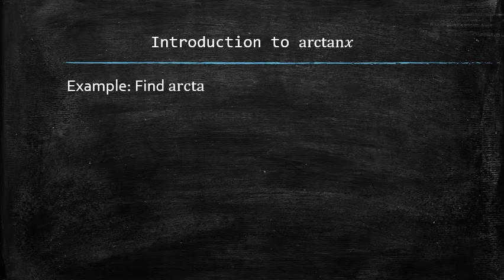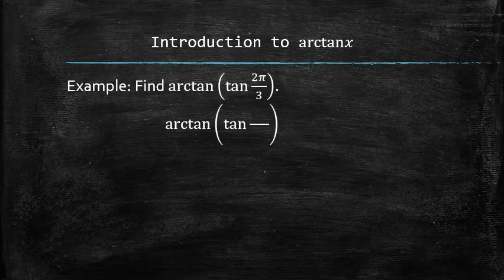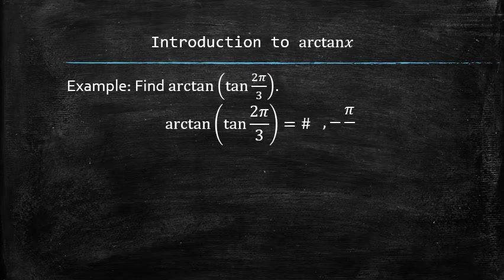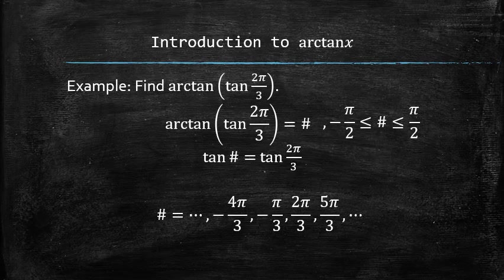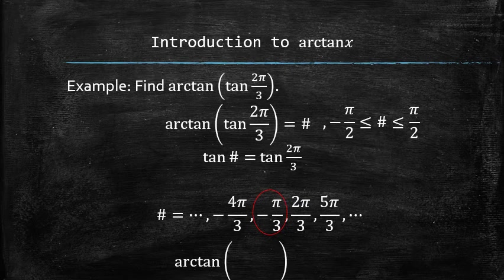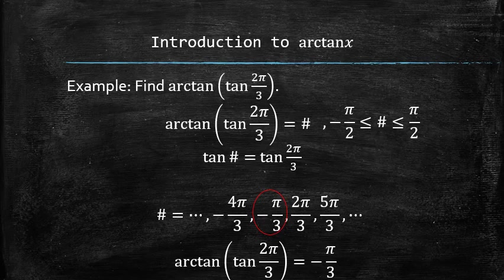Let's find the arctangent of the tangent of 2π/3. We're looking for some value that is between -π/2 and π/2 such that the tangent of that value is the same as the tangent of 2π/3. There are infinitely many such values, but only one of them is in the desired interval. Therefore, the arctangent of the tangent of 2π/3 is -π/3.